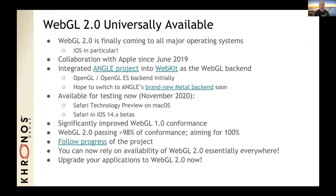One big announcement: WebGL2 is finally becoming universally available, in particular coming to iOS. There's been a collaboration with Apple ongoing since June 2019, done by taking the ANGLE project — originally used to make WebGL run on Windows — and integrating it into Apple's WebKit engine as the WebGL back-end. Initially it targets OpenGL and OpenGL ES, with plans to switch to ANGLE's brand-new Metal back-end soon. You can test this right now in Safari Technology Preview on macOS and in Safari in the iOS 14.x betas.